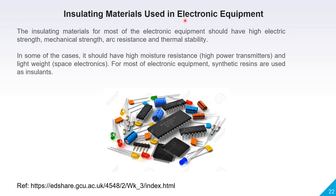Insulating materials used in electronic equipment: insulating material for most electronic equipment should have high electrical strength, mechanical strength, arc resistance, and thermal stability. In some cases it should have high moisture resistance. For most electronic equipment, lightweight synthetic resins are used.